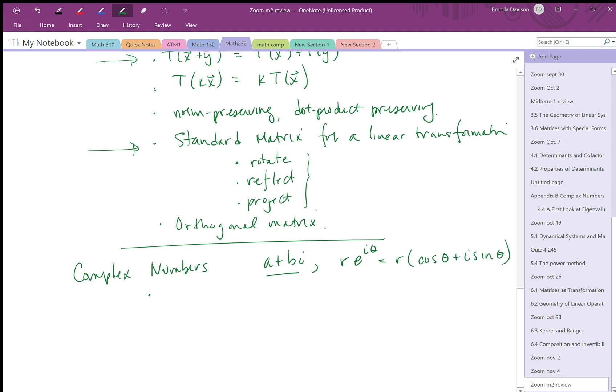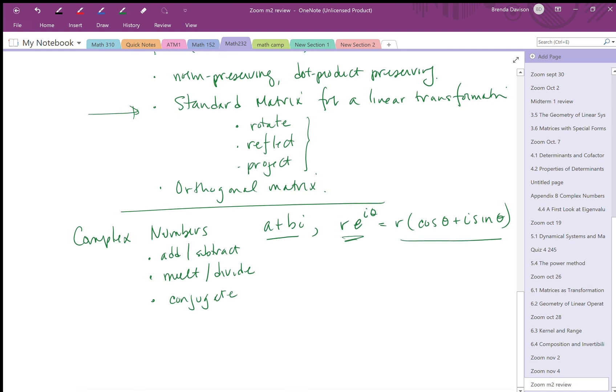You can go back and forth between the polar representation and the rectangular representation. You need to be able to take complex numbers and go back and forth between representations, be able to add and subtract them, multiply and divide them, understand what the conjugate is, and be able to draw them in the complex plane.